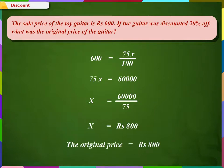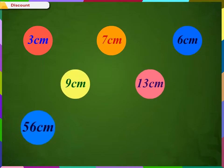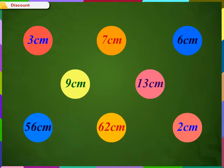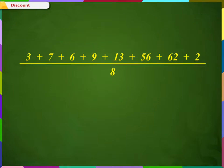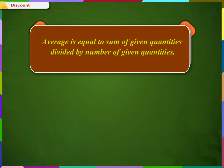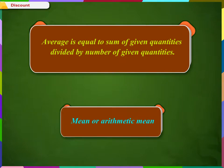If there are various quantities and we want to represent each of them by a single quantity in general, we add all the given quantities and then divide the sum by the number of given quantities. The resulting quantity is called the average, which represents each of the given quantities in general. Average is equal to the sum of given quantities divided by the number of given quantities. Average is also called mean or arithmetic mean.